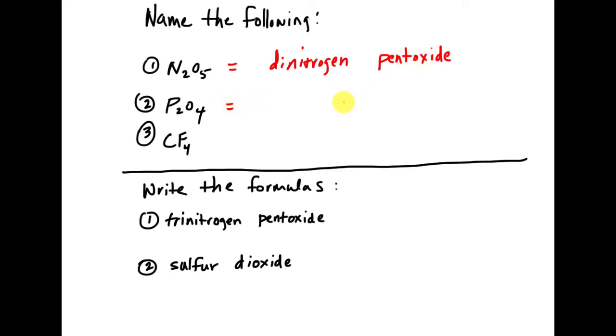So, for the next one, I do di, phosphorus. And then I would do tetra. And then again, since I have tetra oxide, I would do tetroxide. And again, if you had tetra oxide, that might be okay. It's debatable.